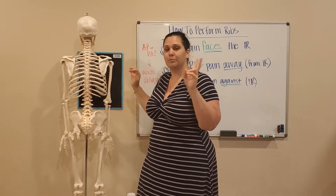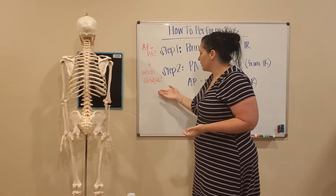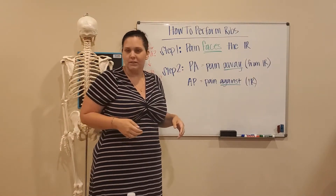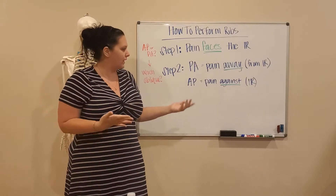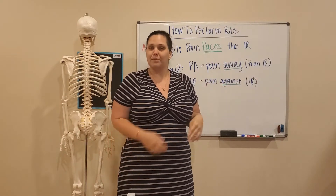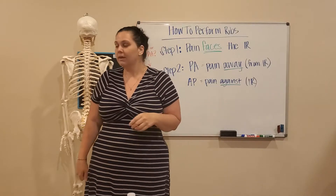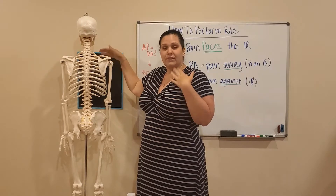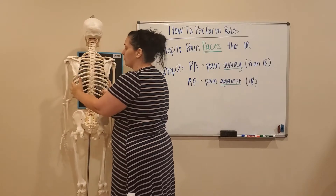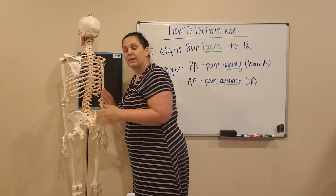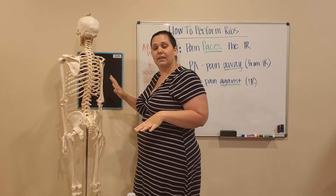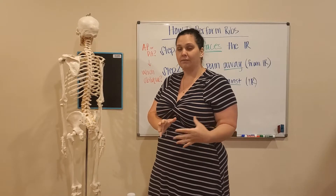Step two tells you the associated oblique. There are two ways this can go: PA — pain away. I like that one because it flows nicely. PA pain away. AP — pain against. If you can remember 'PA pain away,' you're in good shape. That's in reference to the image receptor or your upright bucky. So for left anterior pain, PA away means the side of pain needs to be directed away from the image receptor.